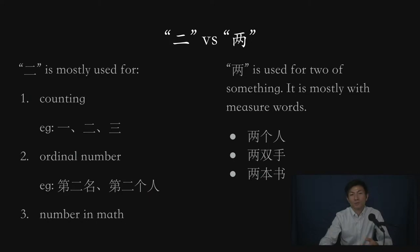Also, for numbers in math calculations, we tend to use 二 more often than 两. I'm going to talk more about that in the next slide.